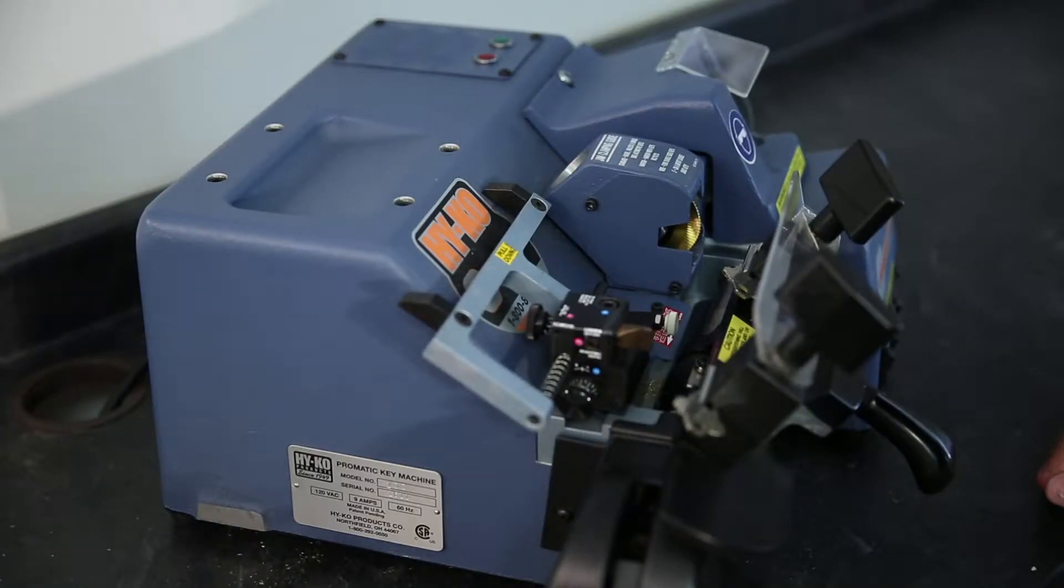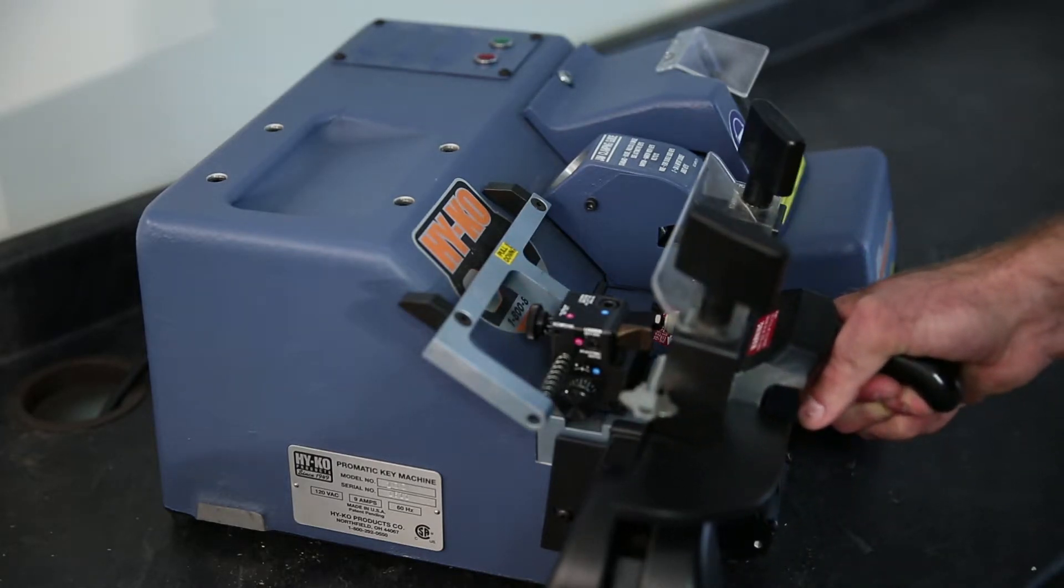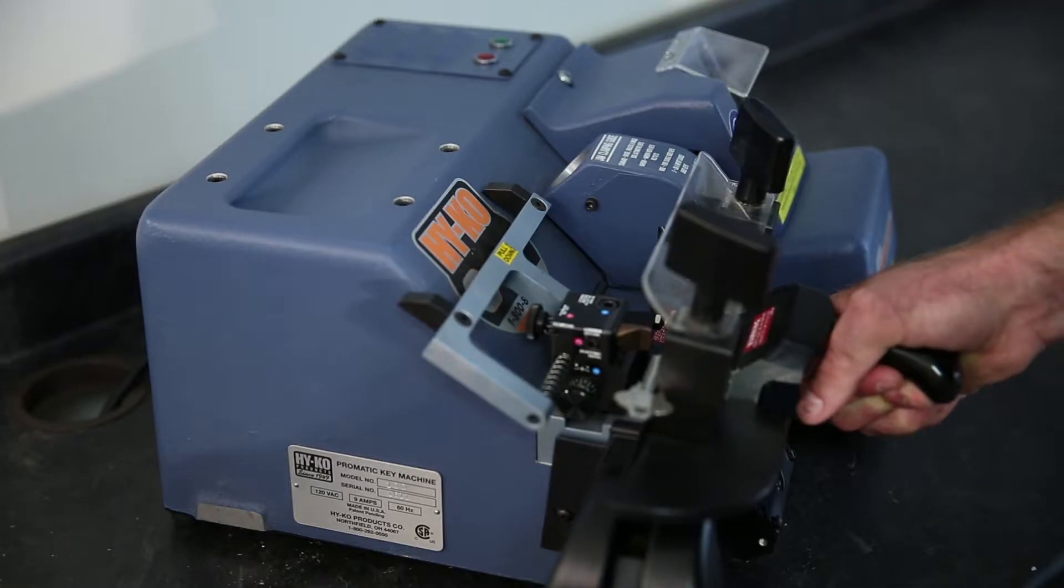Squeeze the trigger to release the carriage. Be sure to slide the bearing behind the pressure plate to keep the carriage locked upwards. Move the carriage towards the right until the tips of the keys are touching the side of the tracer and the cutter.